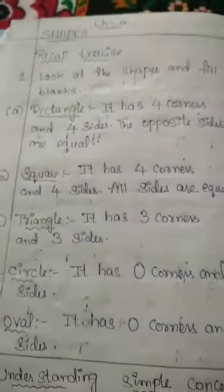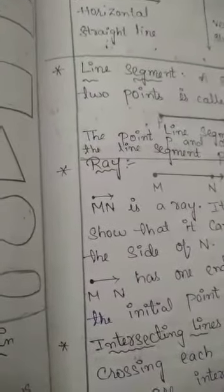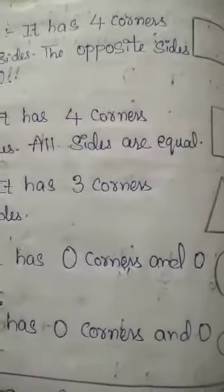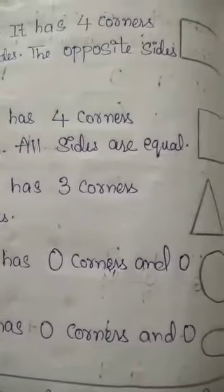So today's class we have learned about shapes and the simple concepts in geometry: point, straight line, line segment, ray, intersecting lines, and curved lines. In the next class I will be doing the continuation of the chapter 7 revision. I hope you understood the concept. Thank you.